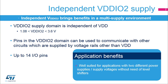The independent VDD-IO2 supply domain allows operation in an environment with several different logic supply voltages. It allows the STM32 to communicate with logic supplied from 1.08 volts — much lower than the VDD supply of the STM32, which can range up to 3.6 volts. Up to 14 I/O pins in this domain can be used to communicate with other logic circuits supplied by voltage rails other than VDD. Independent voltage supplies may allow for the omission of external voltage level shifters in the design.